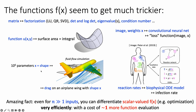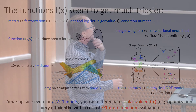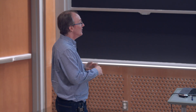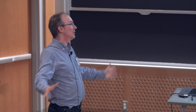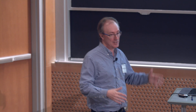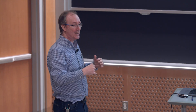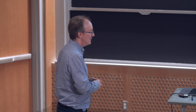In engineering, you might do a structural mechanics or fluid simulation and want the derivative of the solution with respect to millions of parameters describing the shape. It shows up in biophysical models — huge systems of ODEs describing systems in the body — where you take derivatives of infection rates with respect to all the reaction rates. Amazingly, even with a billion parameters, you can differentiate a scalar-valued function with respect to every one of those variables at the cost of essentially one additional function evaluation.